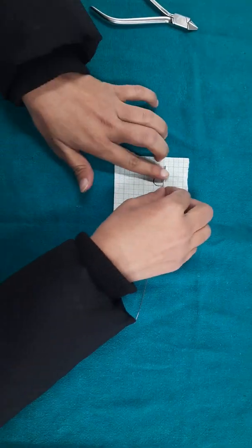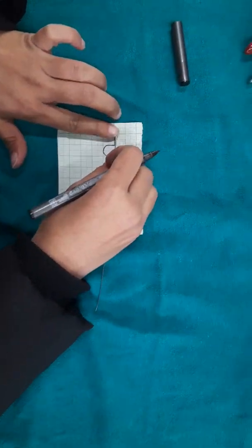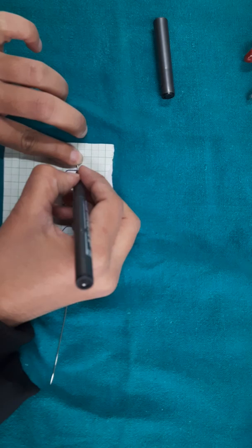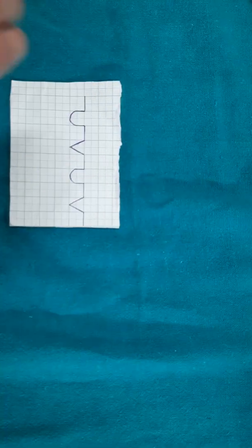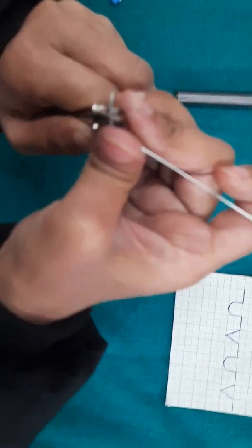Align the wire to a horizontal line on the graph paper and mark a point 1 cm away from the end. Now keep the plier on the mark and give a sharp 90 degree bend.